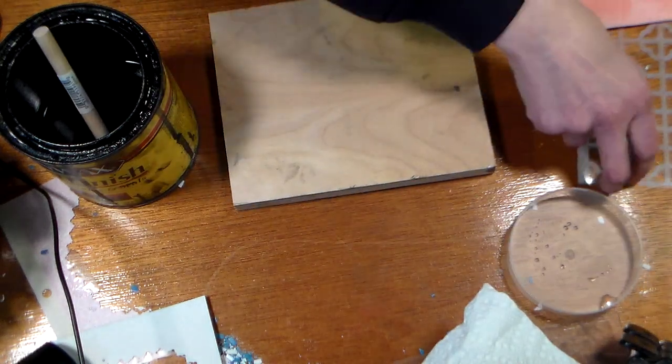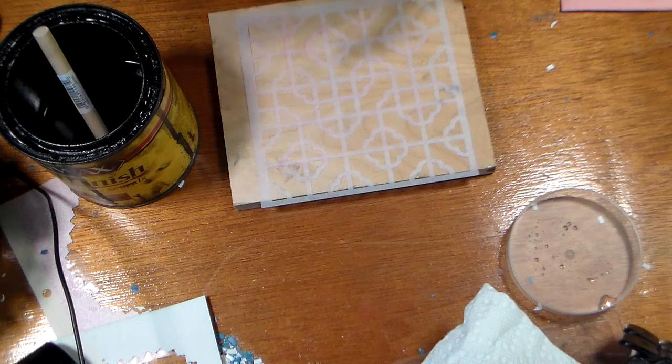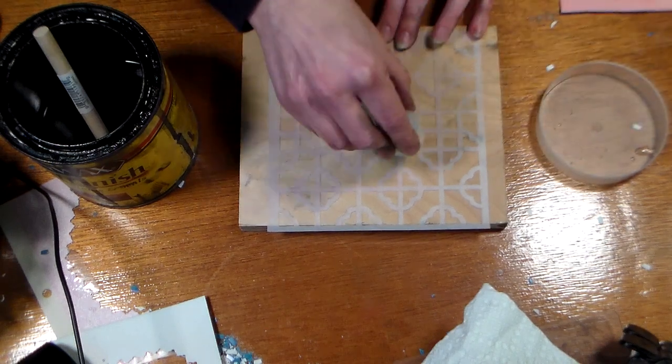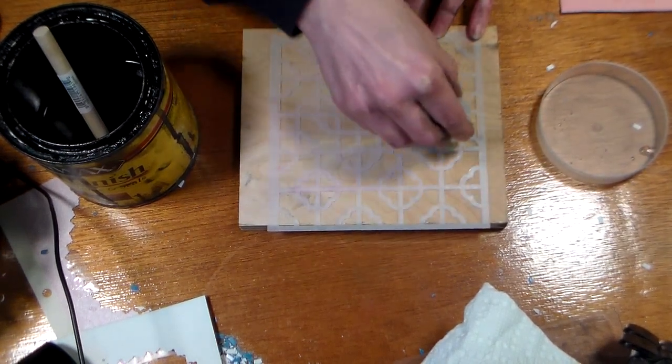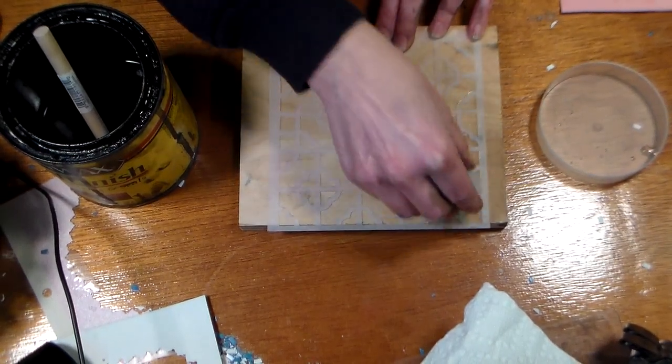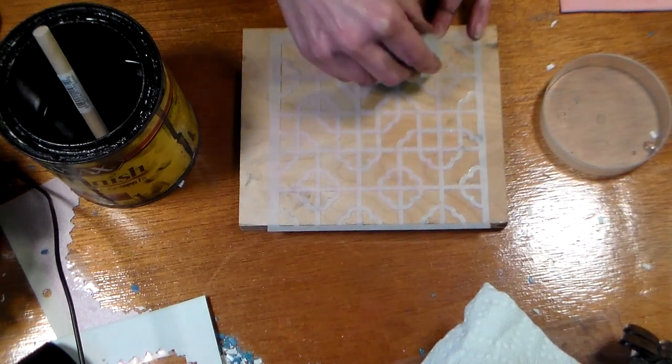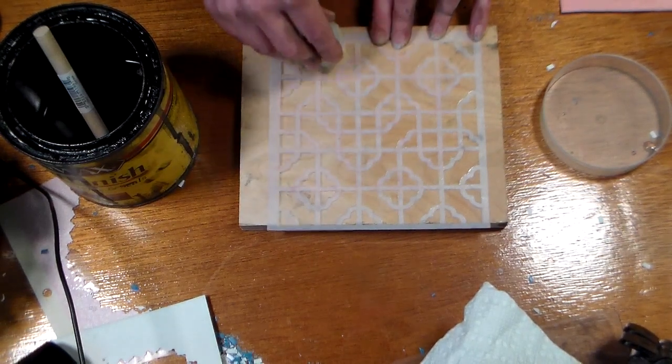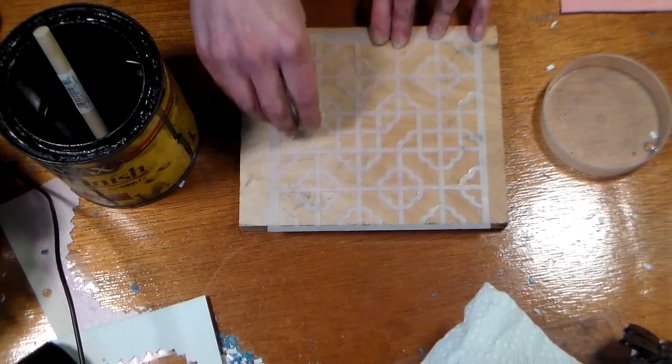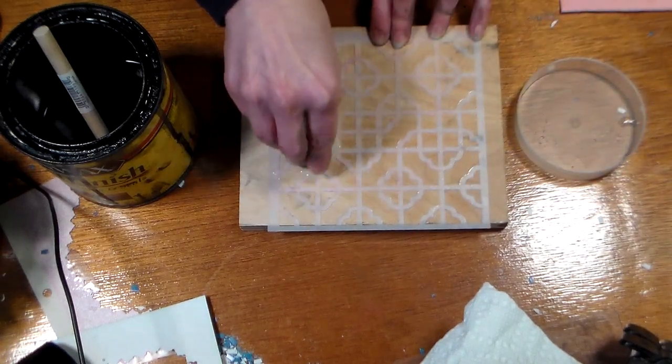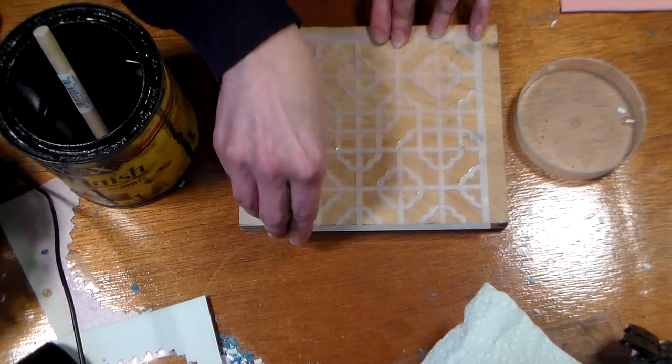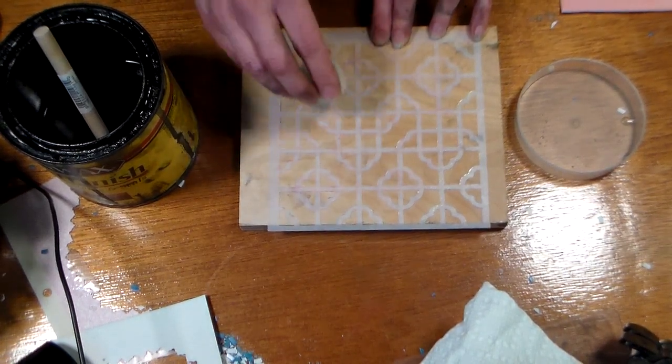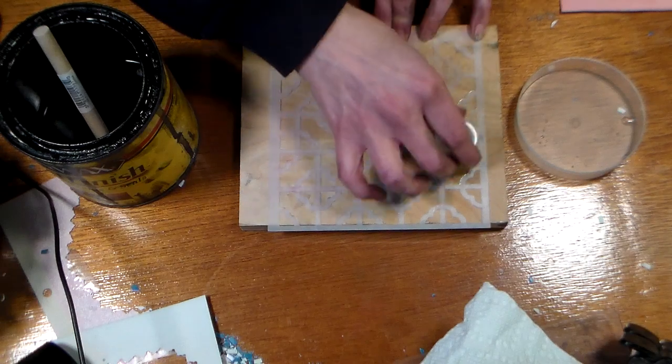But then I thought hey wouldn't it be cool if we use some of our crafty stencils. What if you're making a woodworking project, making like a dresser or a little end table or something. This would be a really cool way to get a pattern on your project and get kind of a tone on tone look. So I grabbed my Judykins tile stencil, and I'm actually trying it for the first time.